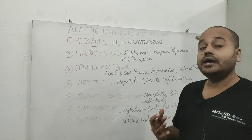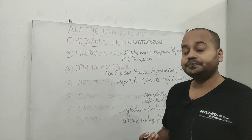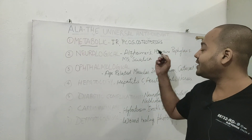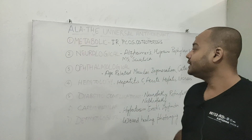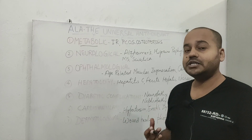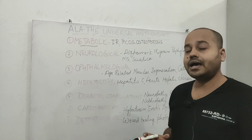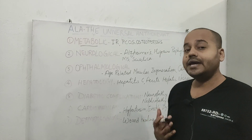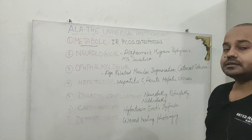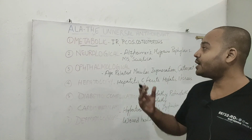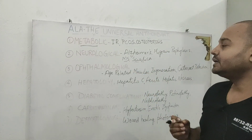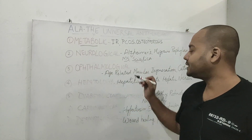Alpha lipoic acid is also known to increase the production of acetylcholine, which can be very useful in Alzheimer's. Additionally, because it is found in mitochondria and takes part in aerobic ATP production, it is useful for migraine prophylaxis. Other conditions where it can be very beneficial include multiple sclerosis and sciatica.